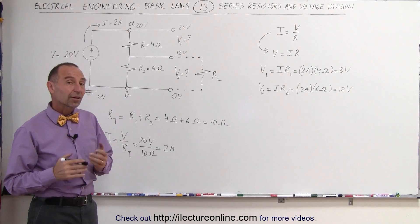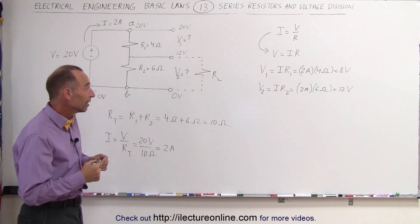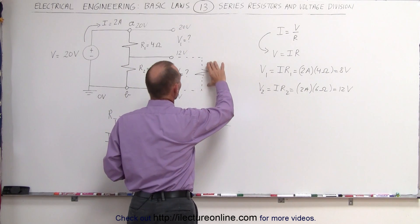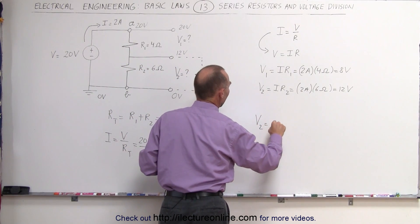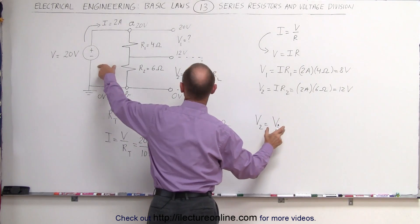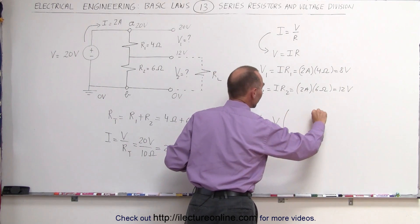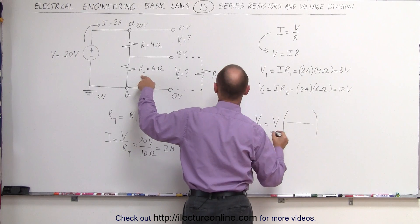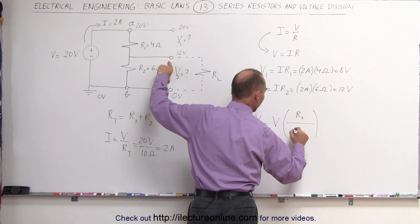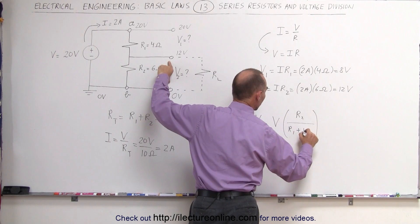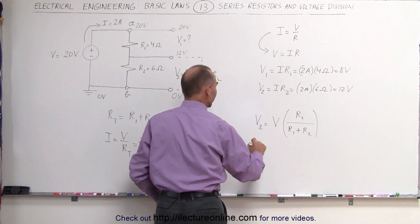One more quick note on this. Another way of dealing with voltage dividers. If, for example, we want a specific voltage right here, V2, that can be written as the voltage applied by the voltage source times the ratio of R2, the resistance across this particular connection, divided by the sum of the two resistors.